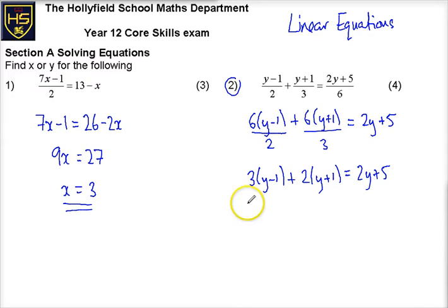So, let's go and look over here. That's going to give me 3y minus 3 plus 2y plus 2 is equal to 2y plus 5.